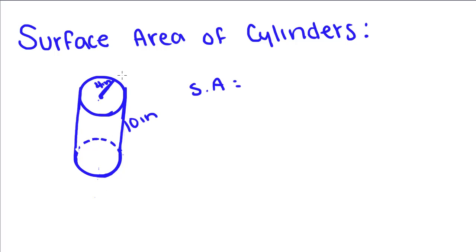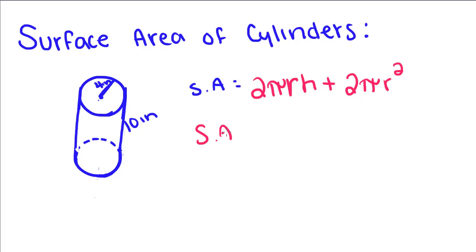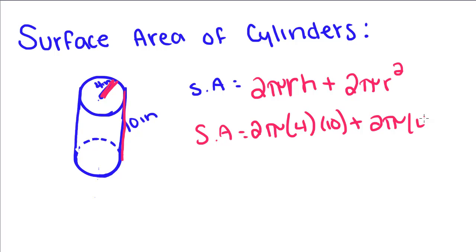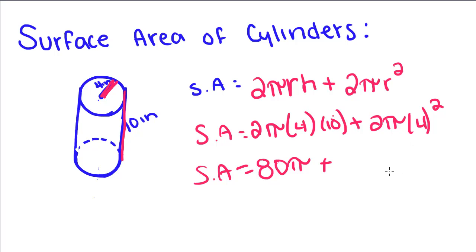Find the surface area. Remember, it's two pi r h plus two pi r squared. Now let's plug things in: two pi, the radius is four, times the height which is ten, plus two pi radius squared. The surface area is equal to two times four is eight, times ten is eighty. Eighty pi plus four squared is sixteen, times two is thirty-two, so thirty-two pi. Our surface area is equal to one hundred twelve pi.